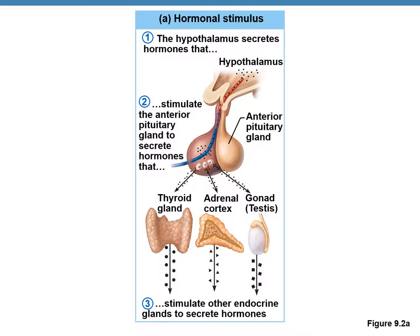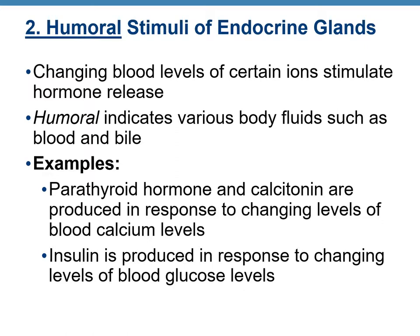This figure shows hormonal stimulus coming from the hypothalamus, which stimulates the anterior pituitary to secrete hormones that in turn stimulate the thyroid gland, adrenal cortex, or testes to secrete their own hormones. The second stimulus is humoral — when the level of certain ions increases or decreases in body fluids, it stimulates secretion of some hormones. For example, when calcium levels in blood change, it stimulates secretion of parathyroid hormone from the parathyroid gland or calcitonin from the thyroid gland.